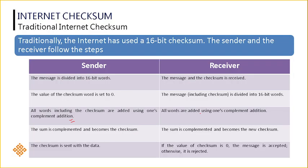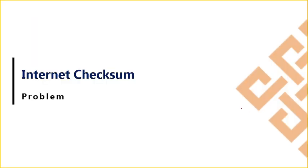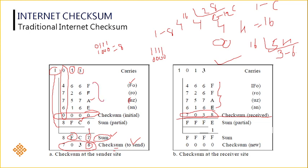Third step: all words are added using 1s complement addition. Same thing what you have done at the sender side, you add at the receiver side also. You will get F, F, E, and 1 is a carry here. That 1 I am adding here. Then I will get E plus 1. E is nothing but 14, 14 plus 1 is 15, which is 1111 in 4 bits — nothing but F. So the sum you get is F, F, F, F.